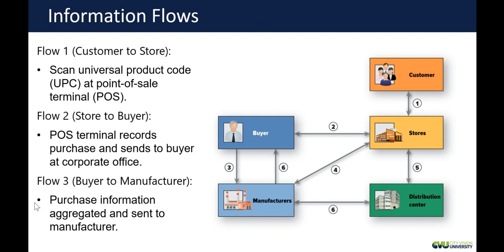This is how information flows — what Mr. Sam saw in the 1970s. We scan the universal product code (UPC) at the point of sale terminal. At step one, the customer buys at the store — that's where we scan the information. Information flow two goes from the terminal to the buyer; the corporate office sees what people are buying. The buyer can also communicate with the manufacturer so we know when to order products.